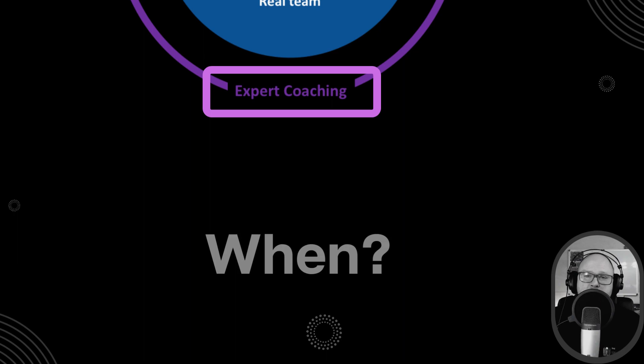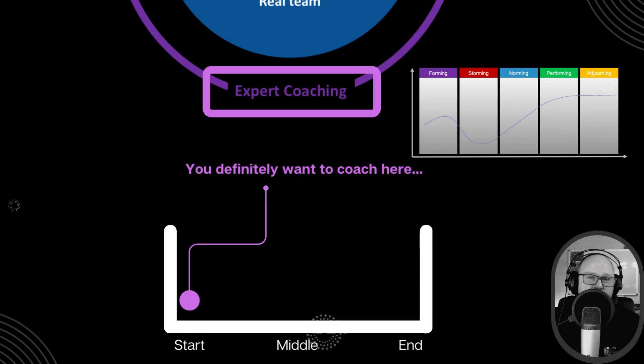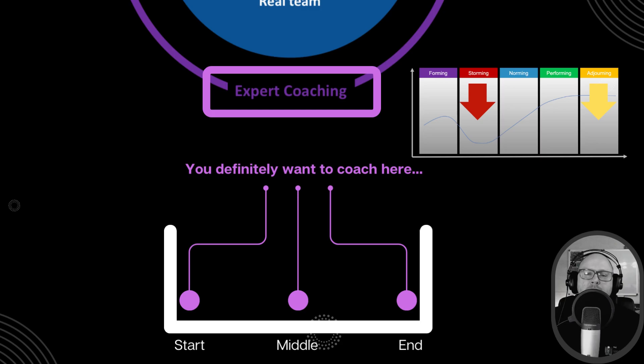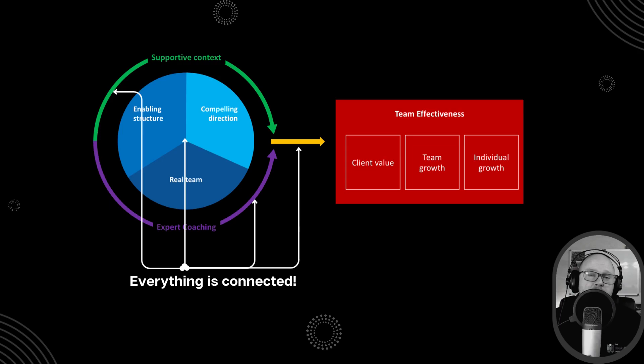As for when to do coaching — as much as possible. Certainly at the start, where storming begins early in Tuckman's model; at midpoints to judge how things are going; and at the end of a team project, which is the debrief when the team adjourns. These all feed into the information system as well. If teams have succeeded or failed, what are the recipes? We learn more from failure than from success, except we don't share that information because we don't like to tell people about failures.